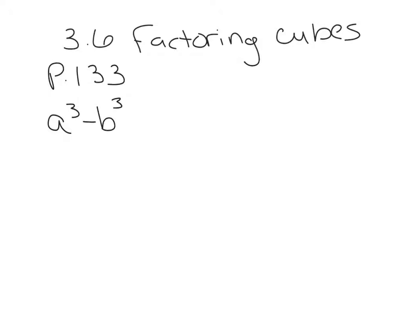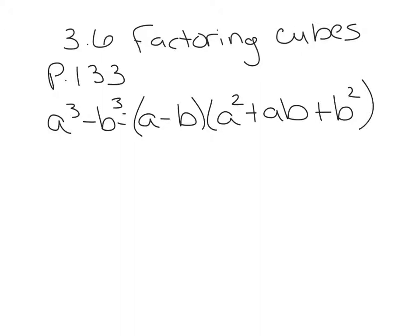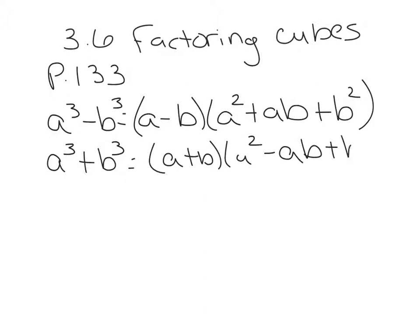When you're factoring the difference of cubes, the formula is (a minus b)(a squared plus ab plus b squared). If you're factoring the sum of cubes, the factors are (a plus b)(a squared minus ab plus b squared). What I want you to notice about these two formulas is that the terms are identical — the only thing different is the signs. So instead of trying to memorize two different formulas, just memorize the terms, and you can use the acronym SOAP to help you remember what the signs are.